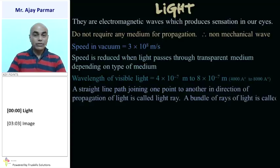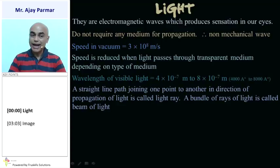The straight line path, that is joining one point to another in the direction of propagation of light, is called a light ray. Whereas the bundle of rays emerging from the source of light, instead of calling it a light ray, we call that a beam of light.